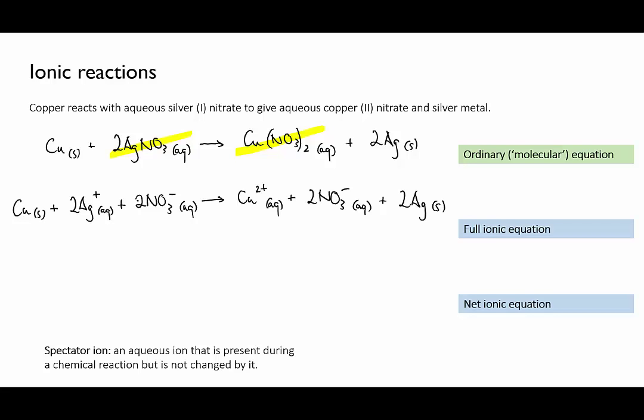Okay, what we have now is called a full ionic equation. All the ionic aqueous species are shown as separate ions and everything else is shown as normal. Can you see anything that doesn't change during this process? That is something that is the same on the left and the right of the equation. Well it's the two nitrate ions. They're there at the beginning and they're still there unchanged at the end. This means that although they're present they aren't actually changed by this reaction.